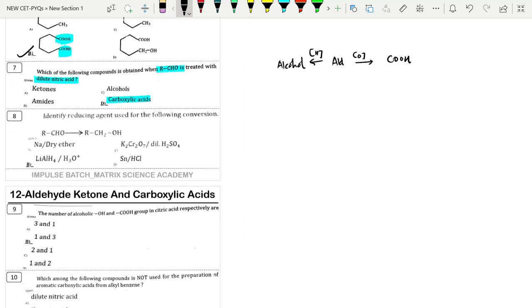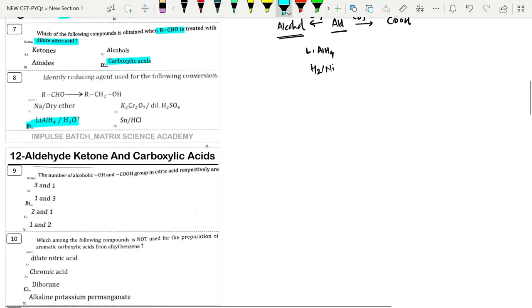Reagent used for following reaction: we can see aldehyde converting to alcohol. Aldehyde to alcohol conversion requires reduction, so we need a reducing agent. We use either LiAlH4 or H2 in presence of nickel, palladium, or platinum. So we will use LiAlH4. Out of the given options, correct option is option B.